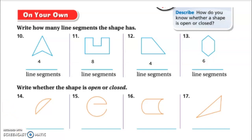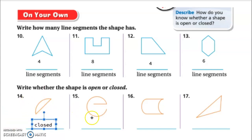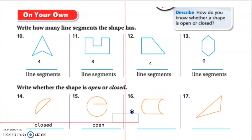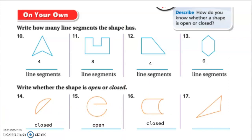They want us to go back and think about those open and closed shapes. Look at number fourteen — is there any spot where this shape is open? Nope, so it has to be closed. Number fifteen: this endpoint and this endpoint do not connect making a whole shape, so it has to be an open shape. Number sixteen: if I started at this endpoint and went all the way around, it would connect, so this shape has to be closed. Number seventeen has to be closed too — it starts and ends at the same endpoint.